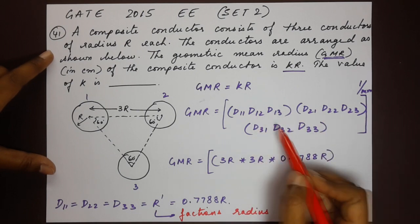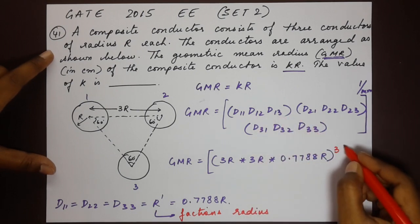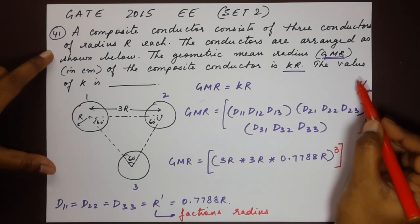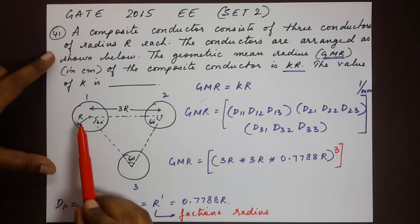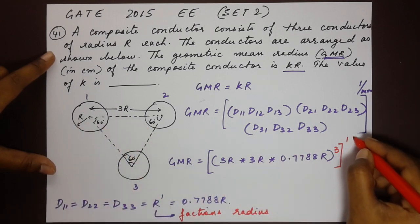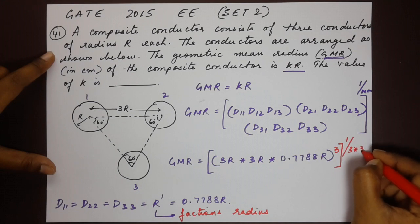Now because they occur 3 times, this is to the power of 3. Now here 1 divided by m times m. Now how many conductors there are over here? We have 3. So that's 1 divided by 3 into 3.